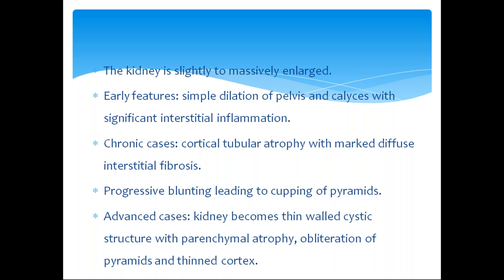Cortical tubular atrophy leads to decreased concentrating ability of the kidneys, leading to progressive blunting and cupping of pyramids. In advanced cases, the kidney becomes a thin-walled cystic structure with parenchymal atrophy, obliteration of pyramids, and thinned-out cortex.